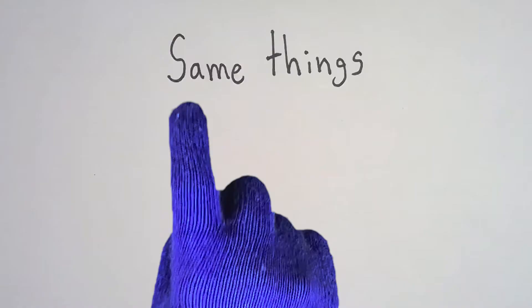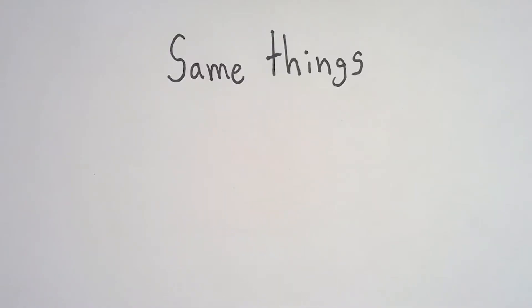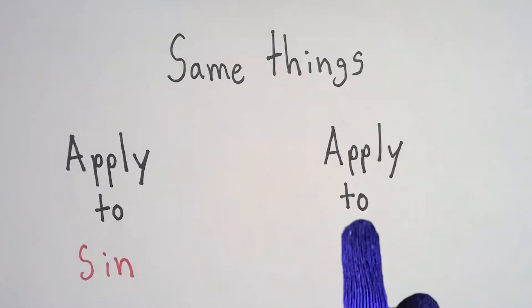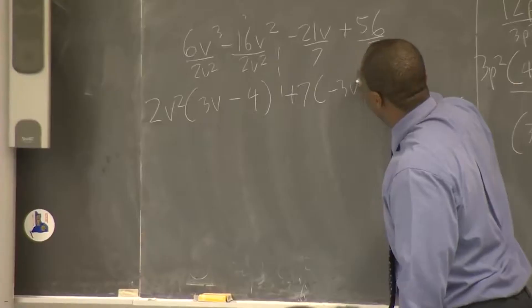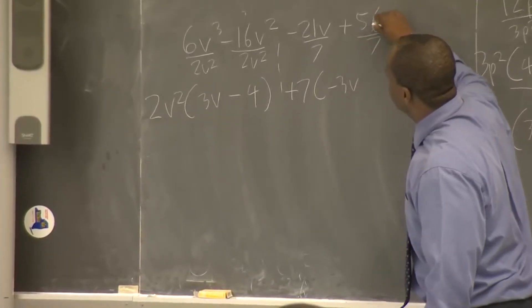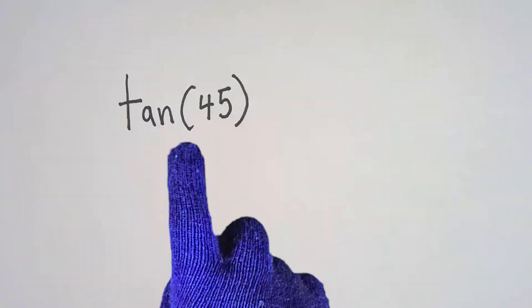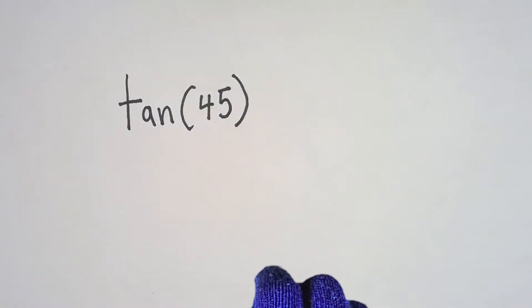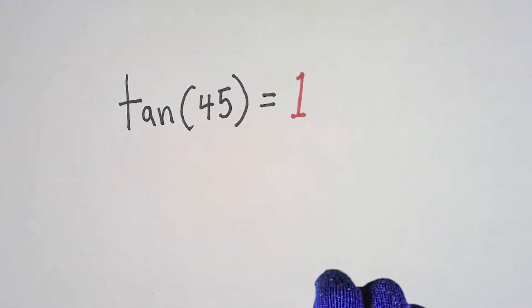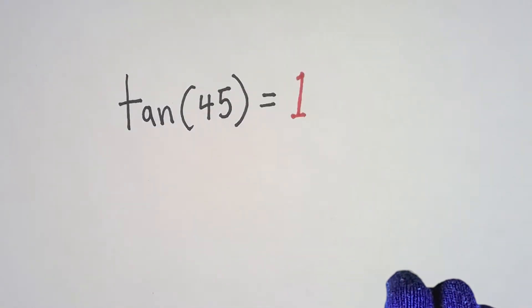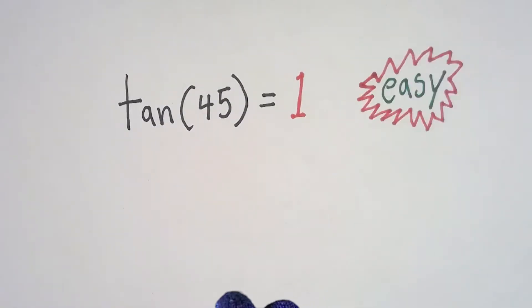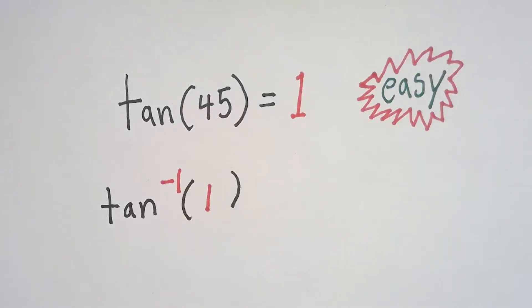See the same things that apply to sine apply to tan. Let me break it down so you can understand. Tan of 45 is equal to one, so the inverse of that is kinda easy. The tan to the negative one of one is equal to 45, and the problem is done.